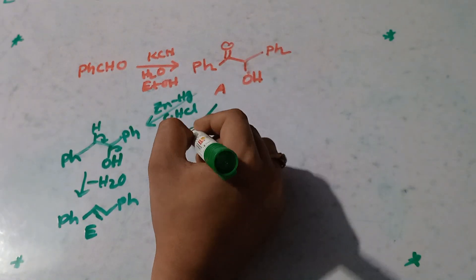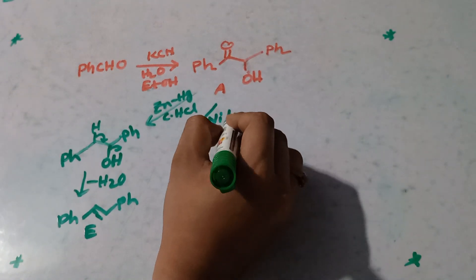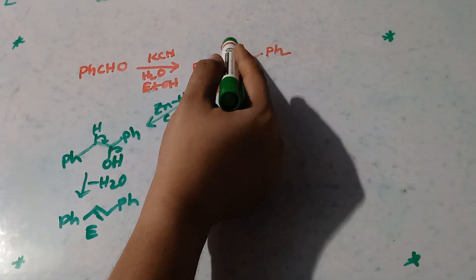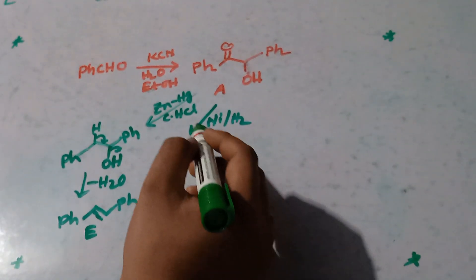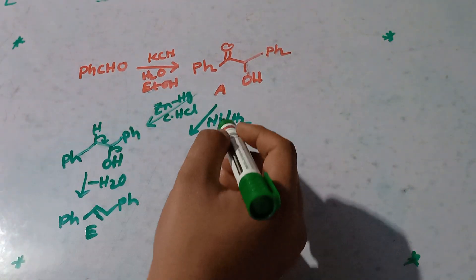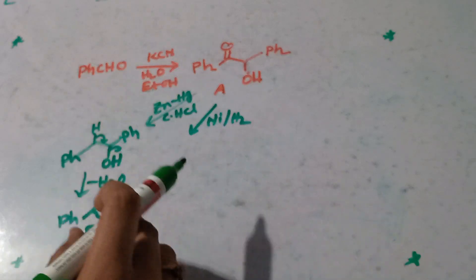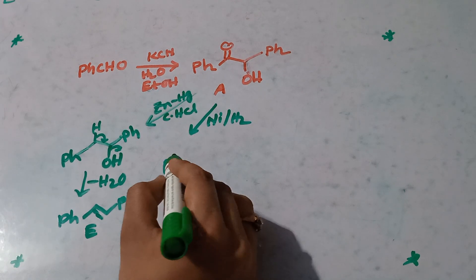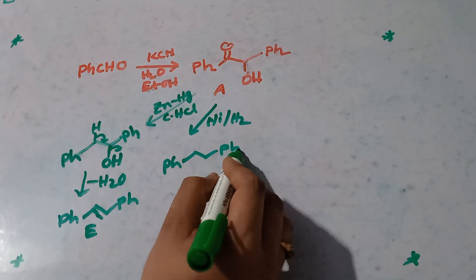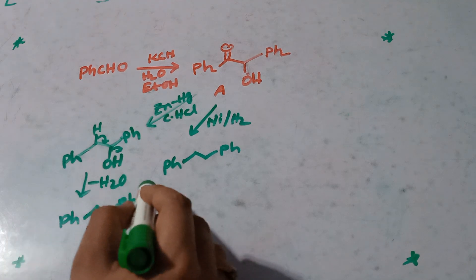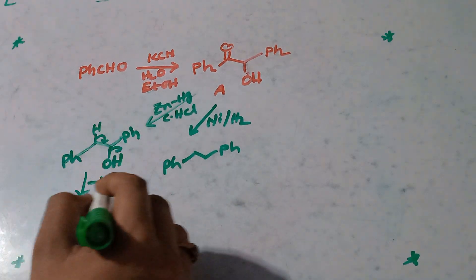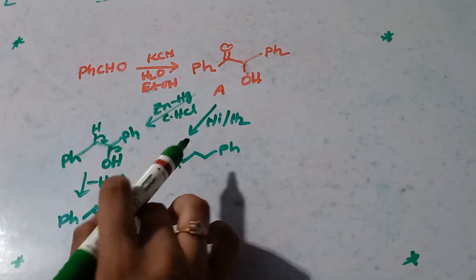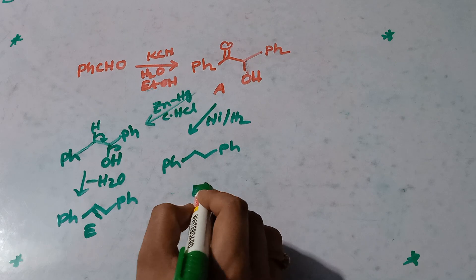Now with Ni/H2 — nickel hydrogen — which is a very strong reducing agent, this is also a reduction because oxygen is getting removed. This strong reducing agent will also reduce the double bond. So for the sake of memorization: if a mild reduction converts to that alkene, then a strong reduction will reduce that double bond as well, giving Ph-CH2-CH2-Ph as our product F.